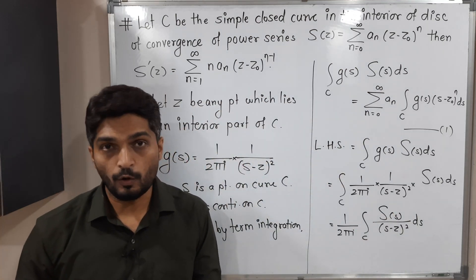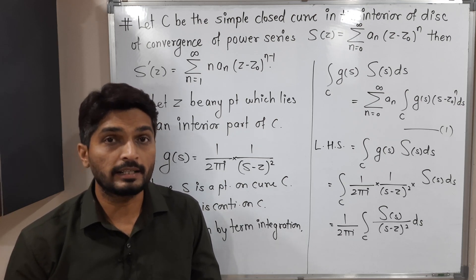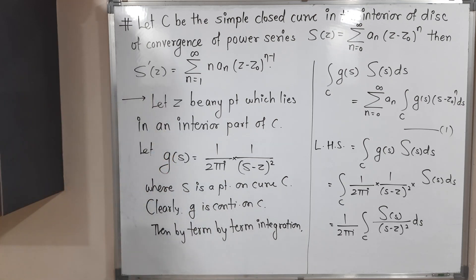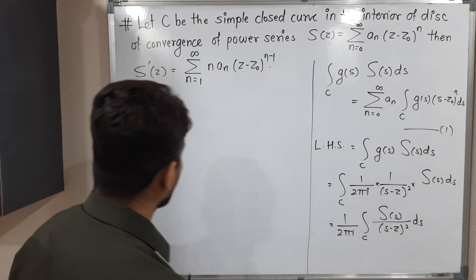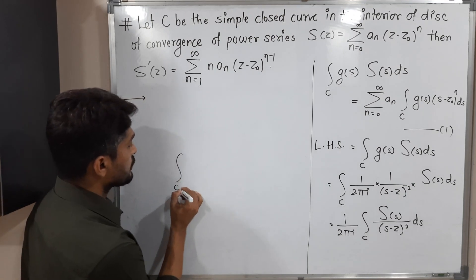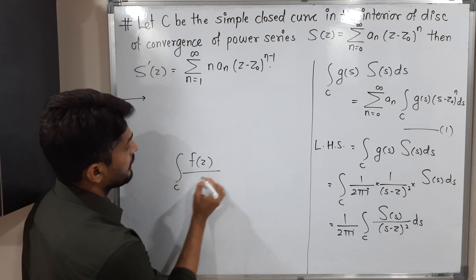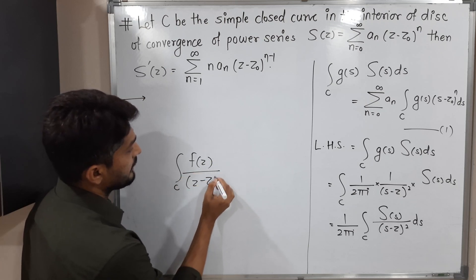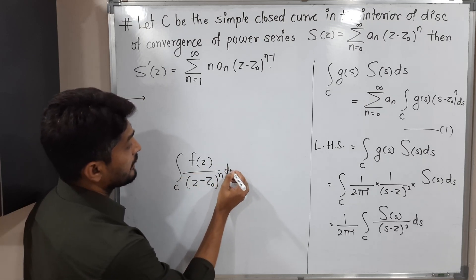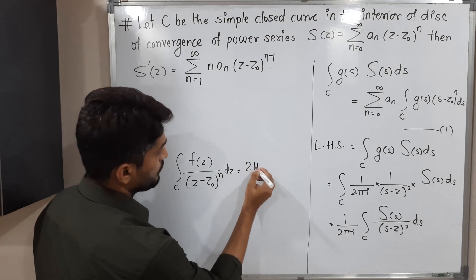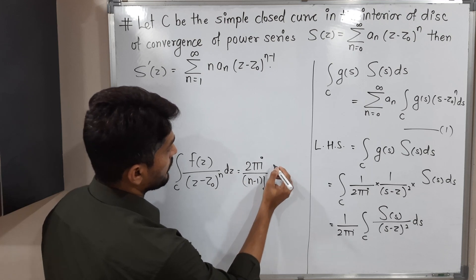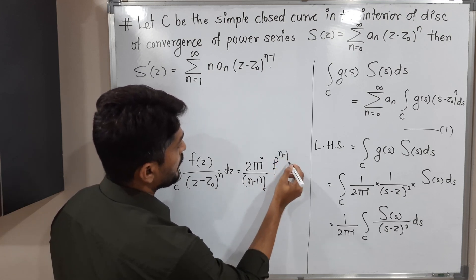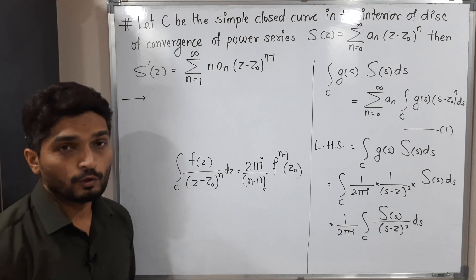Now I am going to use the corollary of Cauchy's integral formula. That corollary states: the integral over C of f(z)/(z − z₀)ⁿ dz equals 2πi divided by (n−1)! times the (n−1)th derivative of f evaluated at z₀.